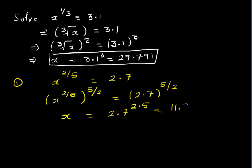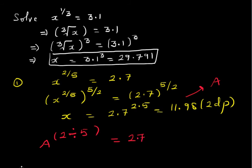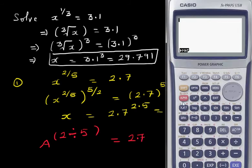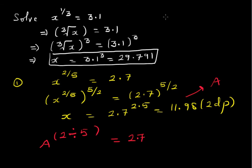To confirm the answer, how can you confirm it? Well we know I have saved this as A. So if I use my calculator, A raised to 2 divided by 5 should give me 2.7. So let me check that. Press alpha A raised to bracket 2 divided by 5 close the bracket equals 2.7.